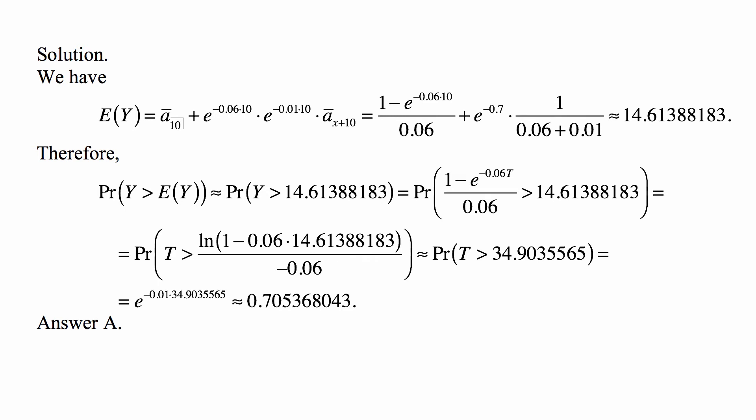Because both μ and δ are constant, which is 1 over, actually, δ + μ, the way it's written, is 0.06 + 0.01, and that's approximately 14.61388183.